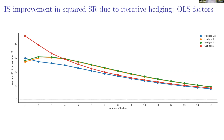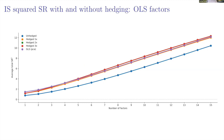The improvement is statistically significant. We also show this in absolute levels — there is a big improvement in squared Sharpe ratio.